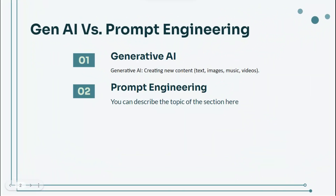First off, let's talk about what generative AI and prompt engineering actually are and how they're different. Generative AI is all about creating new content. This could be anything from text, images, music, and even videos. Think of it as a way for machines to mimic human creativity.